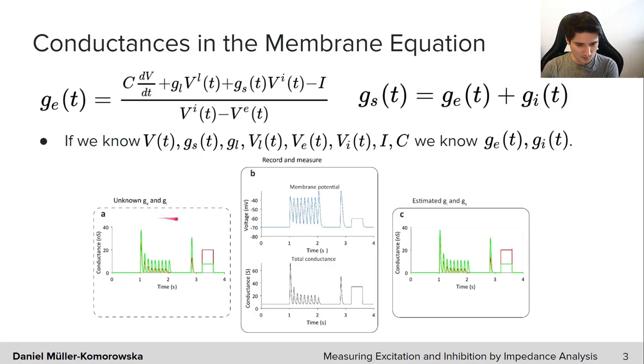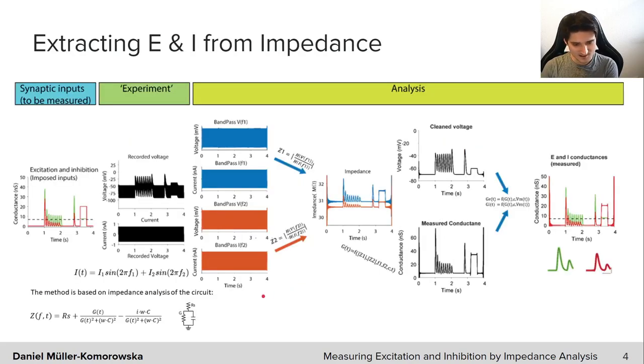This is illustrated here where we have Ge and Gi, Ge being in green and Gi in red and we really don't know both of those quantities, but if we measure the membrane potential as well as the total conductance that has caused those membrane potential changes, we have isolated Ge and Gi. And it turns out one of the ways to achieve this, to measure both membrane potential and total conductance, is through impedance analysis.